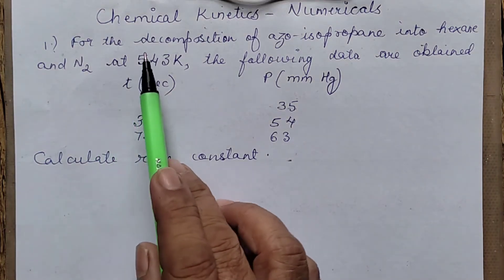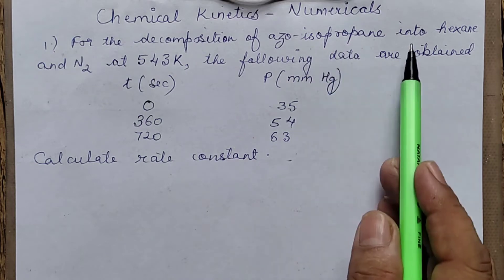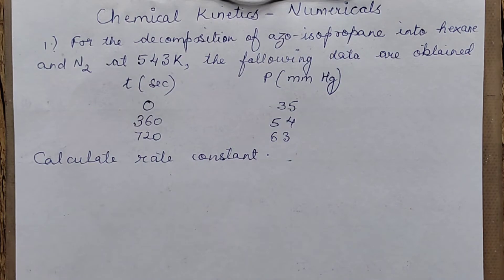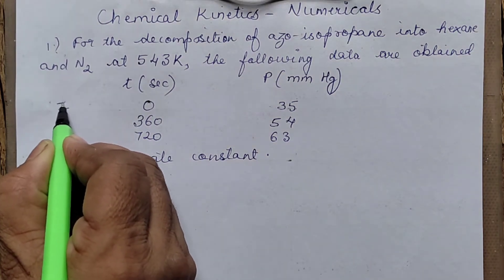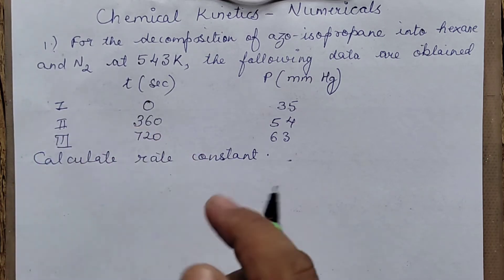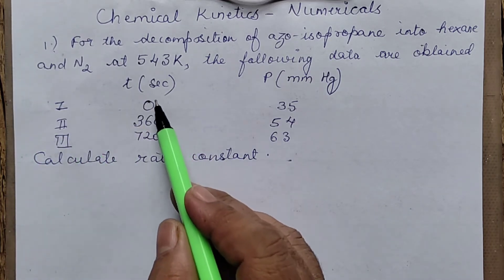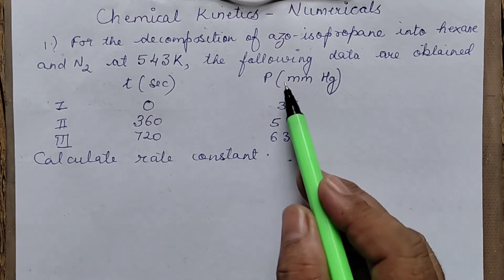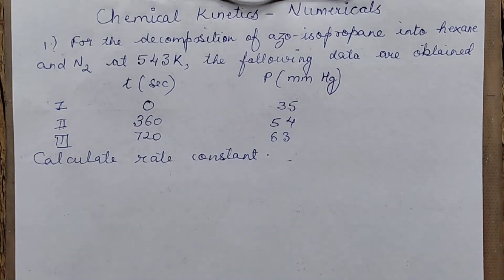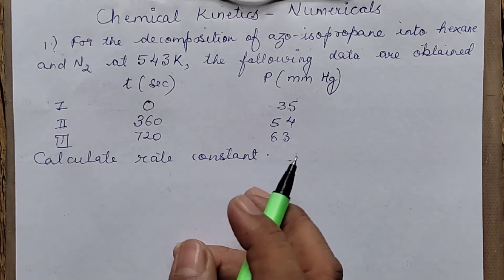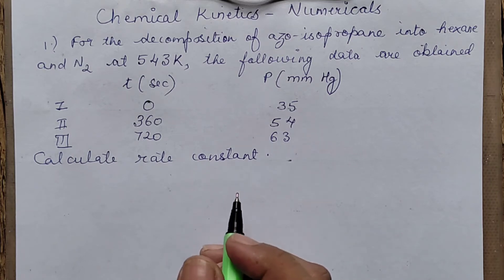The first question says: for the decomposition of azoisopropane into hexane and nitrogen at a given temperature, the following data is given. There are 3 different experiments with time values of 0, 360, and 720 seconds. The pressure is given in millimeters of mercury and you are asked to calculate the rate constant. For this question we are following first order kinetics.